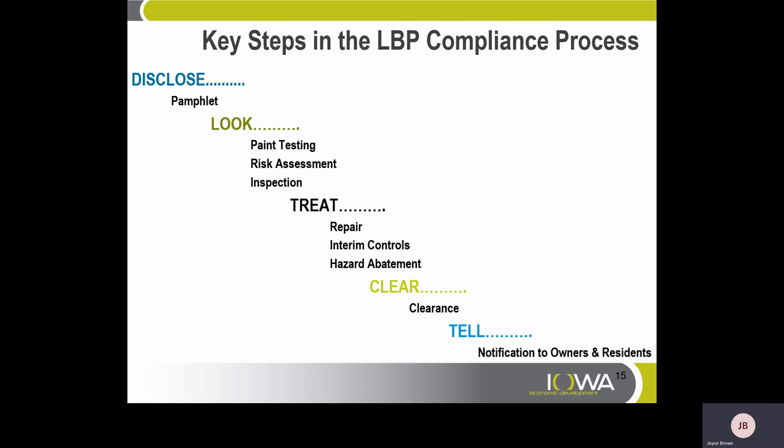Key steps in the lead-based paint compliance process: disclose, look, treat, clear, and tell. To disclose, you must offer a pamphlet. To look is to do paint testing, risk assessment, or inspections. To treat is to repair interim controls or conduct hazard abatement. Clear is to conduct clearance. And tell is notification to owners and rehabs of the results.